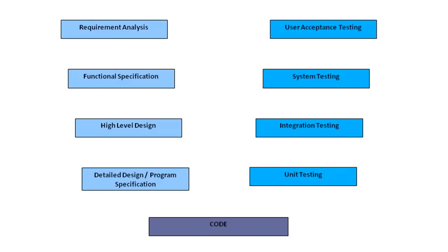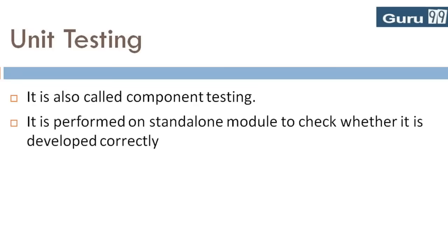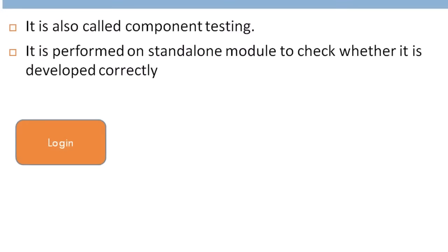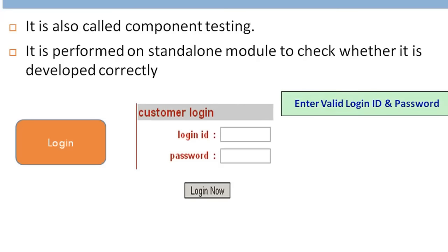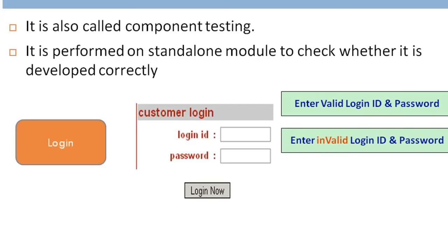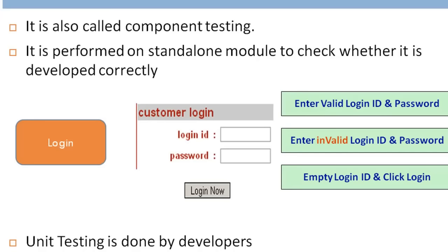Unit testing, also called component testing, is performed on a standalone module to check whether it is developed correctly. For the login module, typical unit test cases would be: check response for valid login and password, check response for invalid login and password, check response when login is empty and login button is pressed. Unit test is done by developers, but in the practical world, developers are either reluctant to test their own code or do not have time to unit test. Many times, much of the unit testing is done by testers.